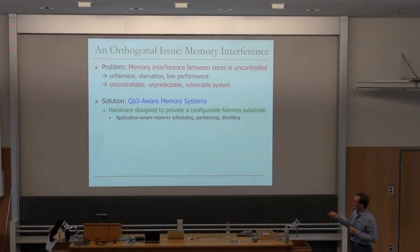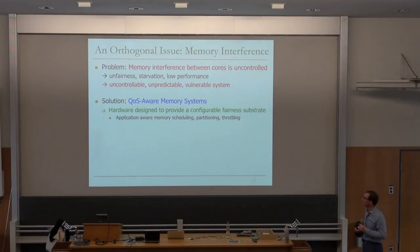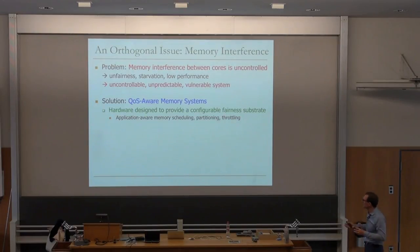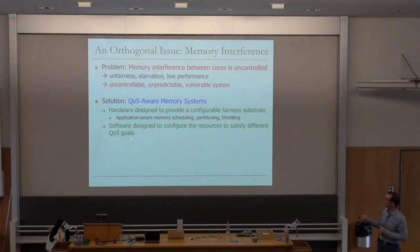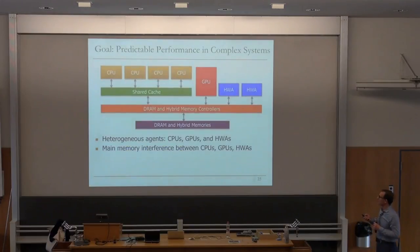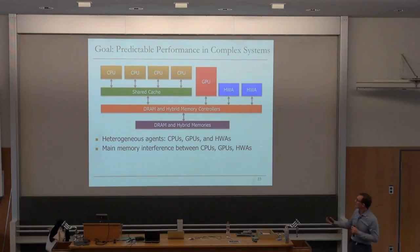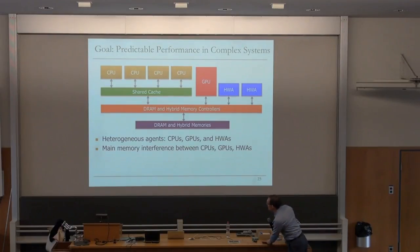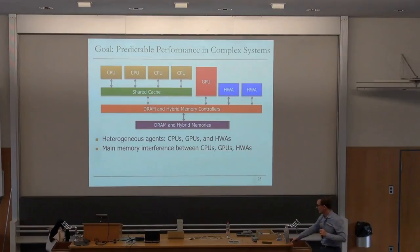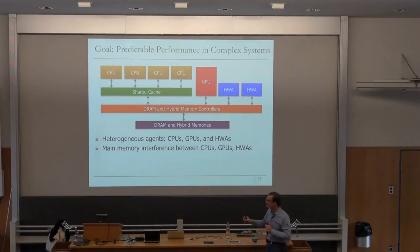We're going to explore the direction of quality-of-service awareness in memory systems. The fundamental idea is to add a notion of QoS or fairness into the hardware, and make it configurable such that the system can take advantage of it. In the end, the requirements are not really known to the hardware — the system actually knows what the user wants. We're going to look at the application of memory scheduling, partitioning, and throttling, and also how to configure the resource to satisfy different quality-of-service goals. We would like to provide predictable performance and higher efficiency.